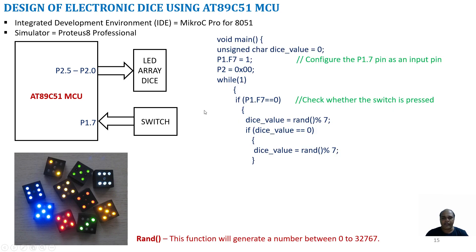In order to do the programming we will be using MicroC Pro for 8051, where we write the embedded C program. A C program starts with the main function. I declare an unsigned character variable called dice_value and it is initialized to 0. As a first step we need to configure Port 1.7 as an input pin, so we set P1F7 to 1. If set to 1 it will be configured as input; if set to 0 it will be configured as output. For Port 2, we initialize it with Port2 = 0x00, thereby Port 2 will be configured as output port.